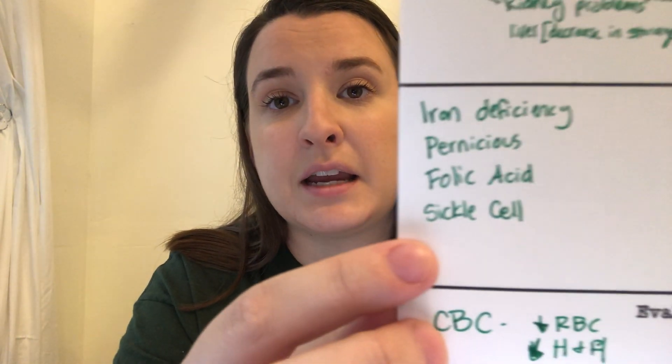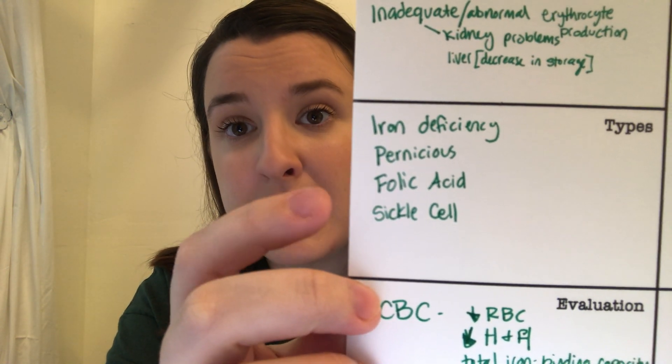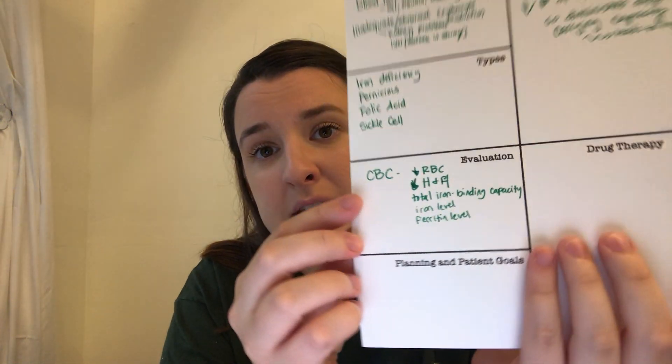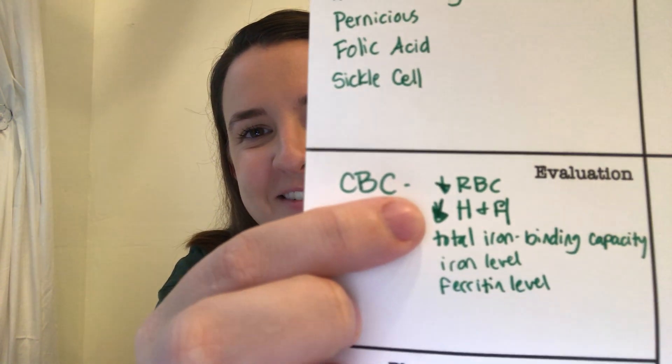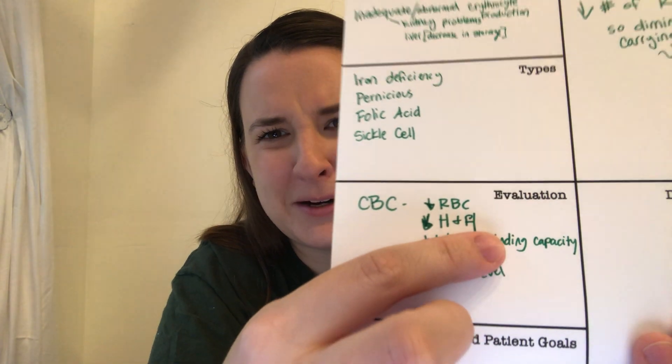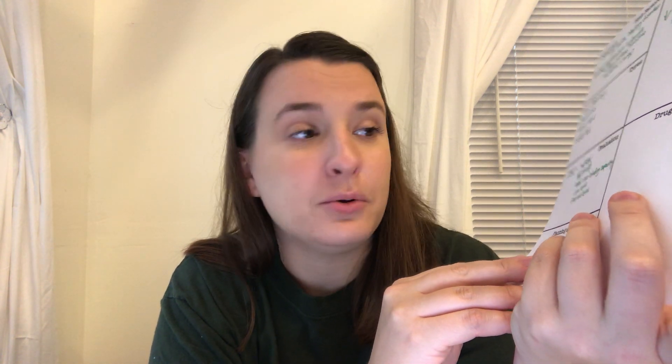There are different types of anemia: iron deficiency anemia, pernicious anemia, folic acid anemia, and sickle cell anemia. When evaluating these patients, you'll do a CBC to check for decreased red blood cell count, decreased H&H (hemoglobin and hematocrit), decreased total iron binding capacity, decreased iron level, and decreased ferritin level.